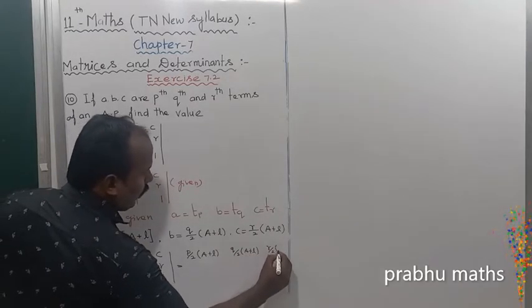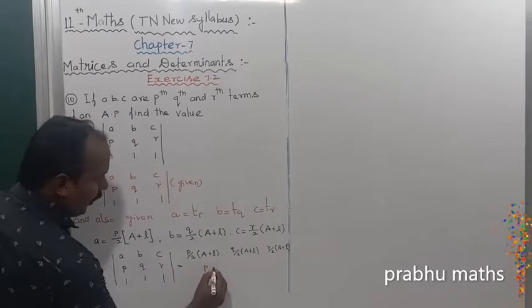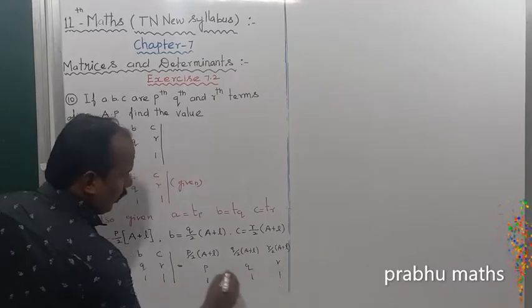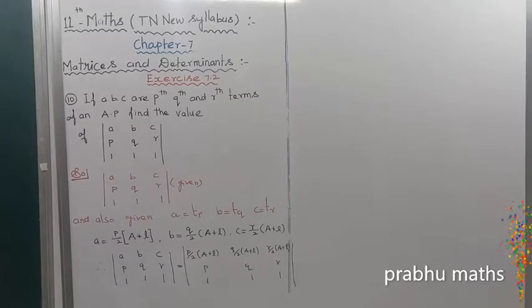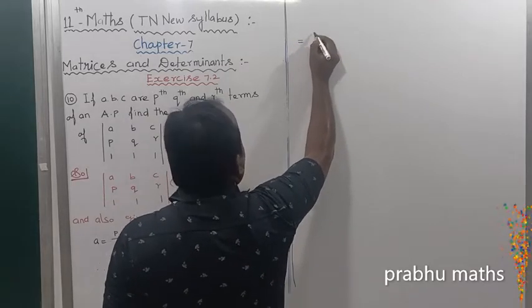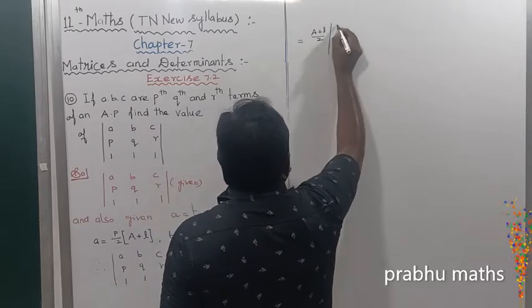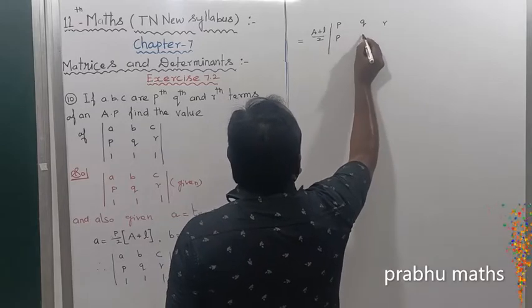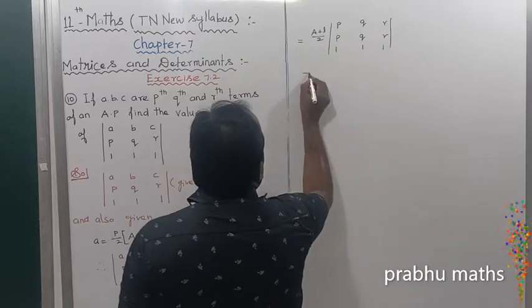r/2(a + l). So first row p, q, r, next row p, q, r, next row 1, 1, 1. The common value of row 1 is (a + l)/2. It is a common value. The remaining values are p, q, r; also p, q, r; 1, 1, 1.